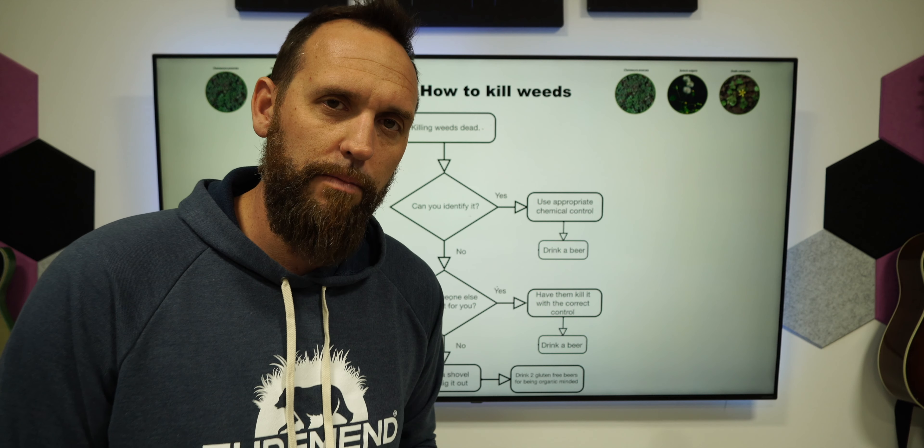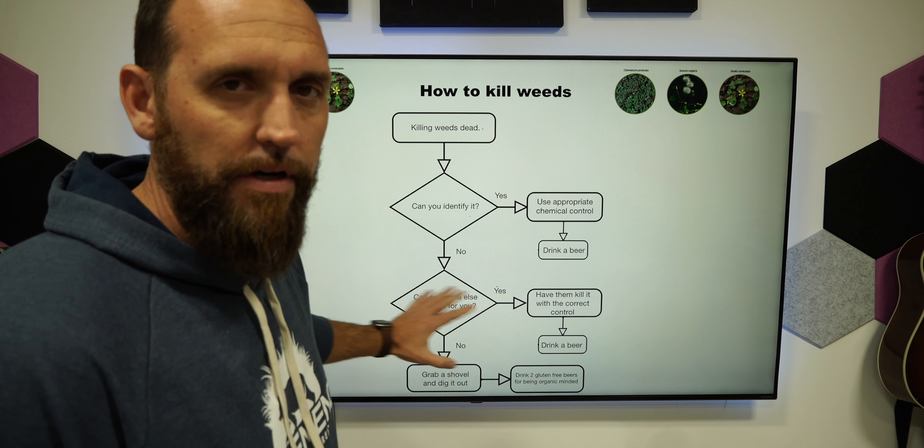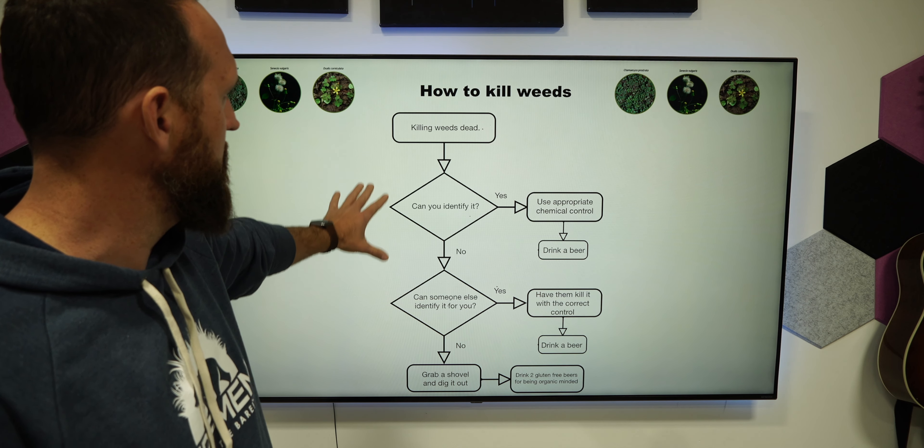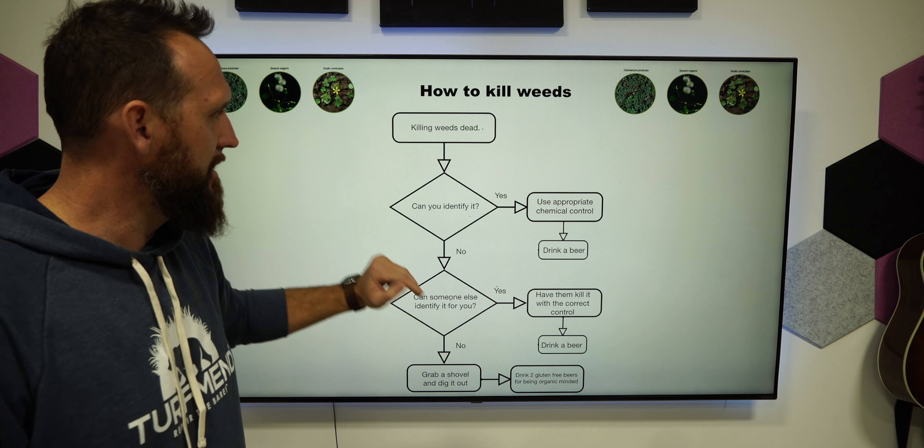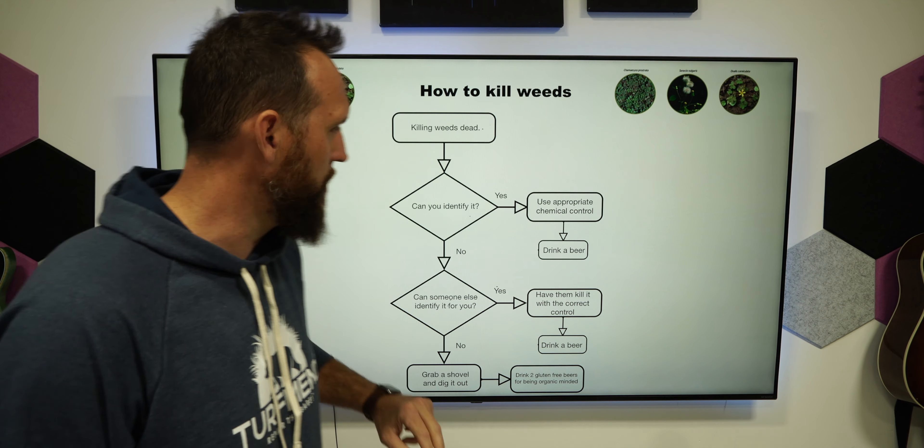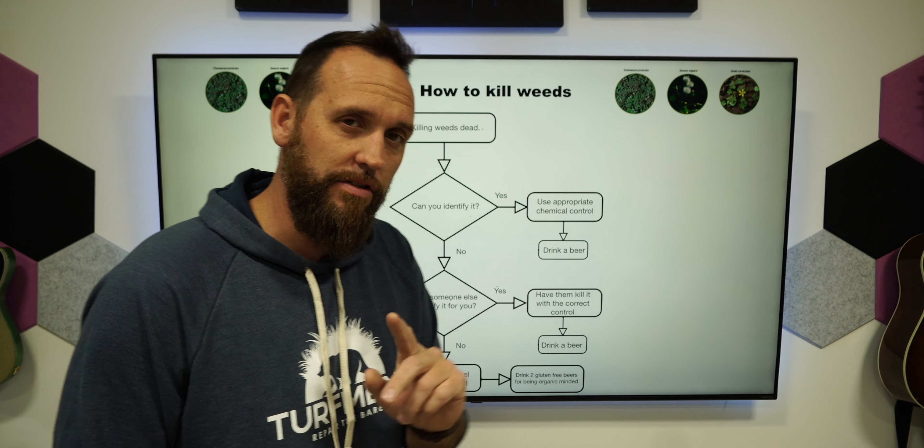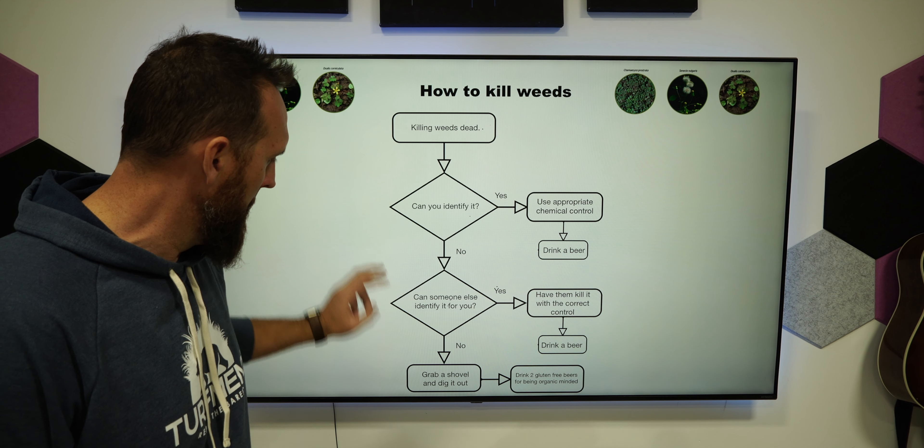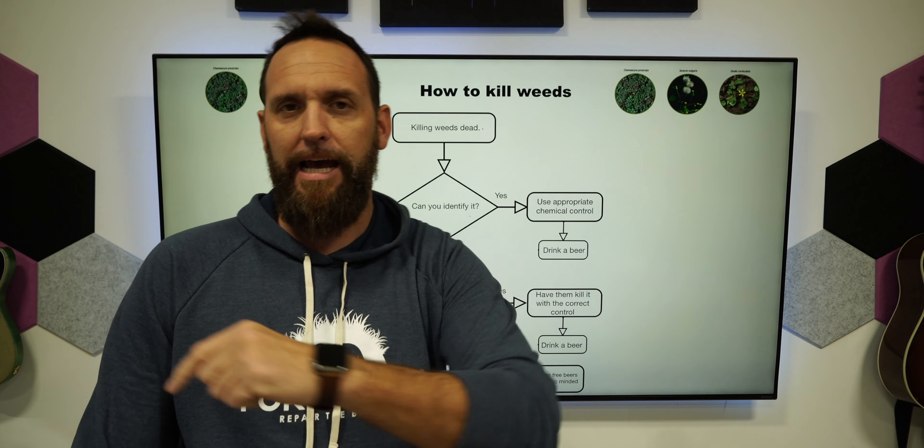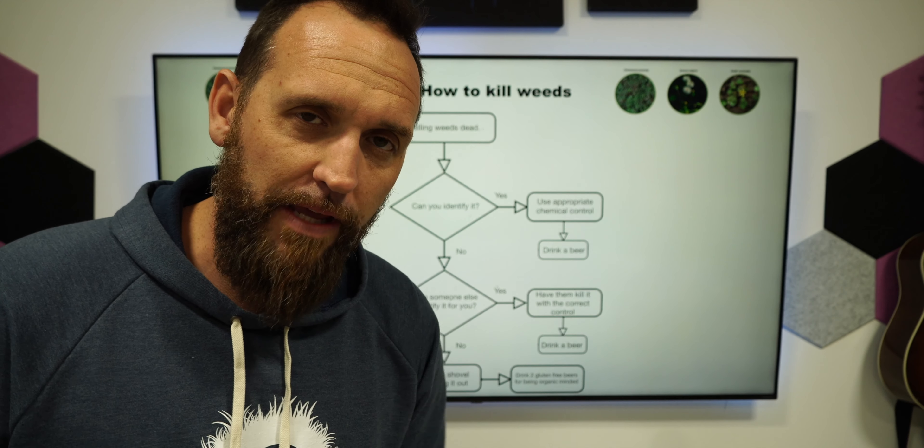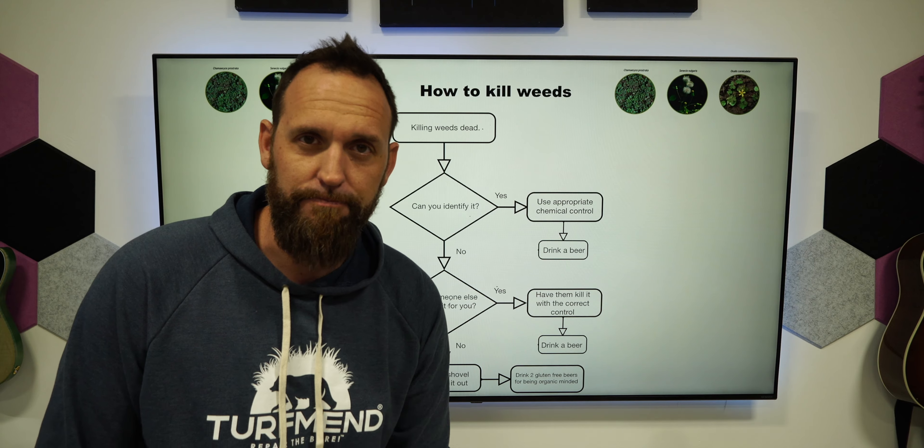That's really going to be the tip. So it's all very simple—this is how you kill weeds. You want to kill them dead. Identify it first, use the appropriate control. If you can't identify it, find some help. Have them take care of it and teach you how to do it. If you can't find anybody that can help you, grab a shovel, dig it out. That's it. Hope you had fun. I'll talk to you guys real soon. See ya.